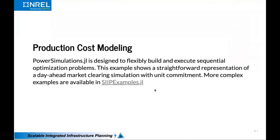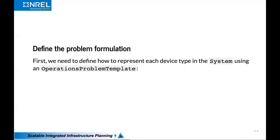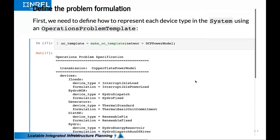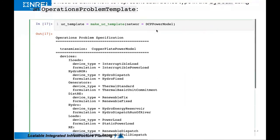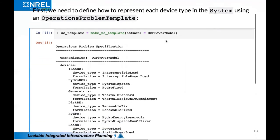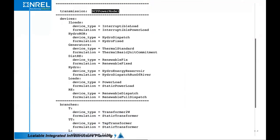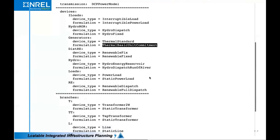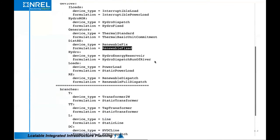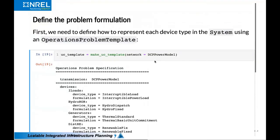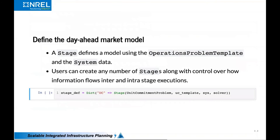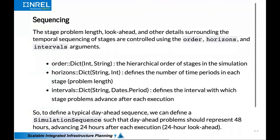We'll do a really simple production cost model running sequential unit commitment problems. There's a lot of flexibility here, but we'll set this up fairly standard. In this particular problem we'll do DC power flow, and for thermal units we'll do a basic unit commitment formulation. This report describes how each device in the network is going to be formulated. There's a lot of flexibility on how you set up the sequence — you can do 48-hour problems, 24-hour problems, or however you'd like.